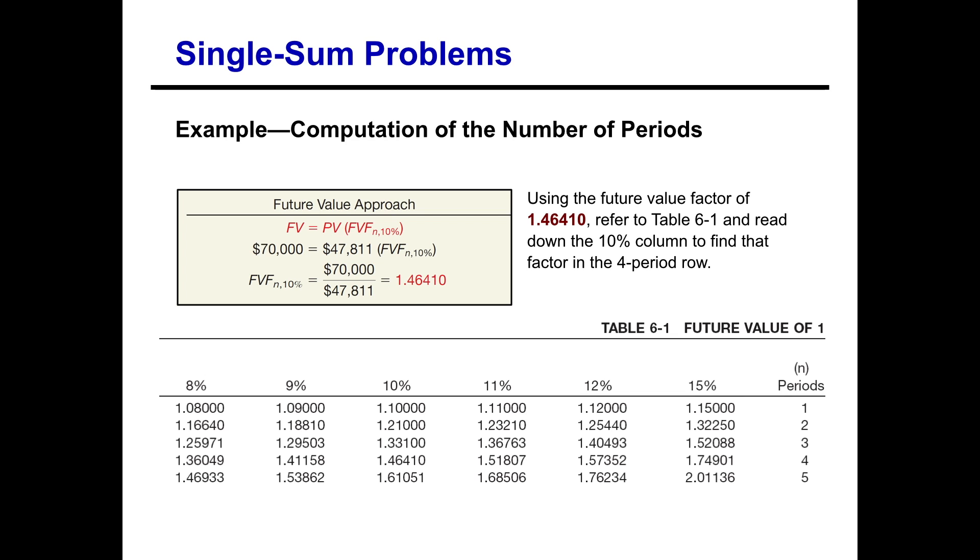And we find the future value factor to be 1.46410. So if we look for that number in our chart, we know it's at 10% interest. So if we go down the 10% column, we find that 1.46410 at the four period mark. So we know that the number of periods it will take to accumulate $70,000 by first depositing $47,811 at 10%, it will take us four years to accumulate $70,000.